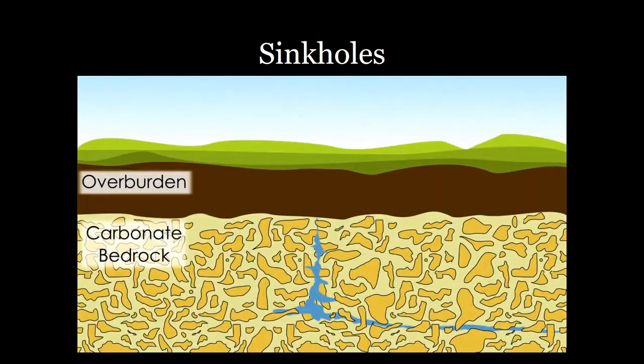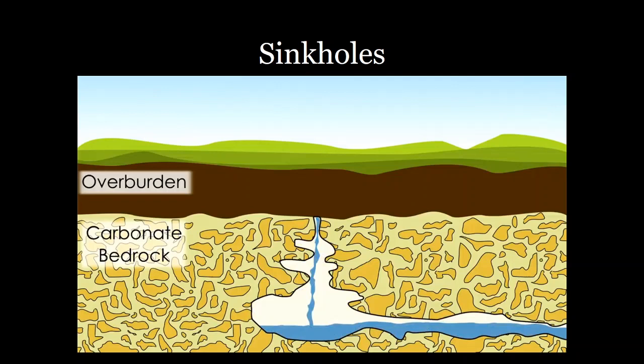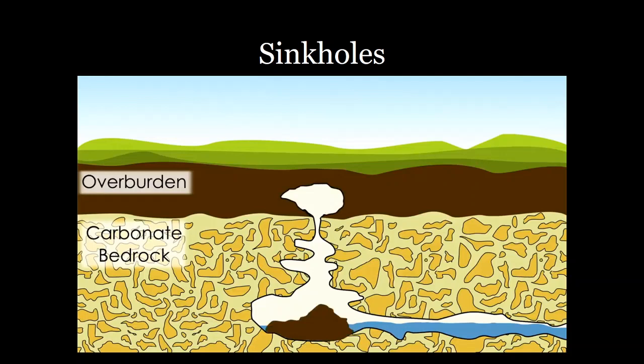Most natural sinkholes occur in areas with large deposits of carbonate rocks like limestone. Over long periods of time, groundwater flowing through the subsurface can dissolve this rock, creating voids and open tunnels — in fact this is how most caves are formed. These tunnels and voids allow water to flow quickly, making it more erosive, and also create a space for soil to wash away into. Any soil overlying a dissolution feature runs the risk of eroding away from the inside, eventually leading to a sinkhole.